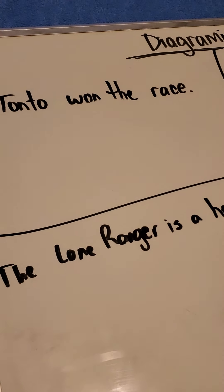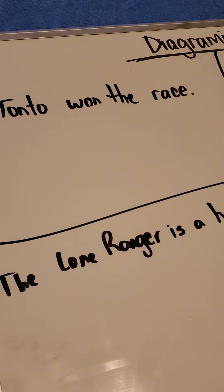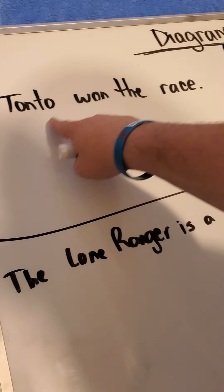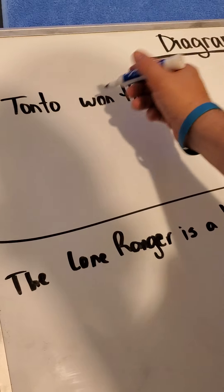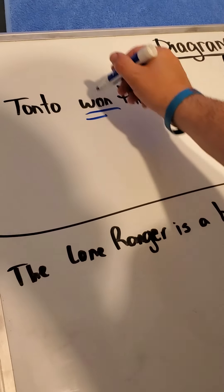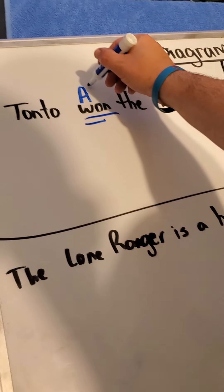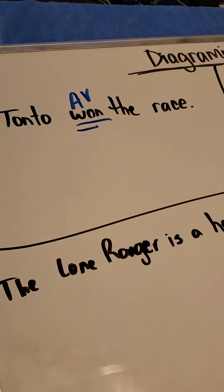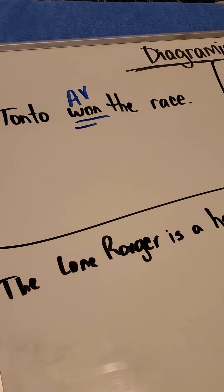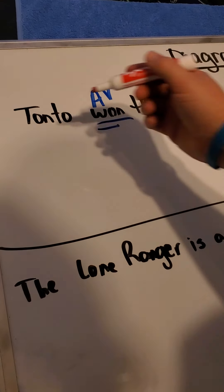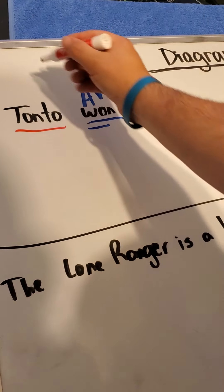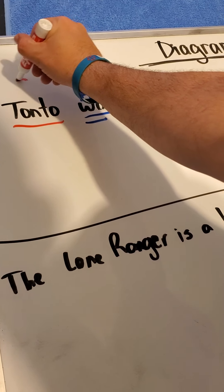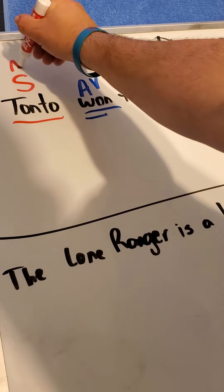I don't see any of those words, so now I've got to look for something I can do. Won — it's an action verb. Now for the subject: who won? Tonto did. Subject — it's a noun.